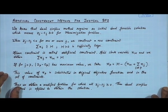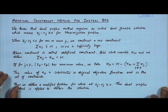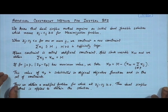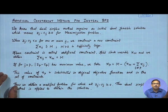Now let us discuss the artificial constraint method for an initial basic feasible solution. The dual simplex method requires an initial dual feasible solution, meaning zj minus cj should be ≥ 0 for a maximization problem. If zj minus cj is not ≥ 0 — that is, if it is less than 0 for one or more j — then we cannot use the dual simplex method directly.